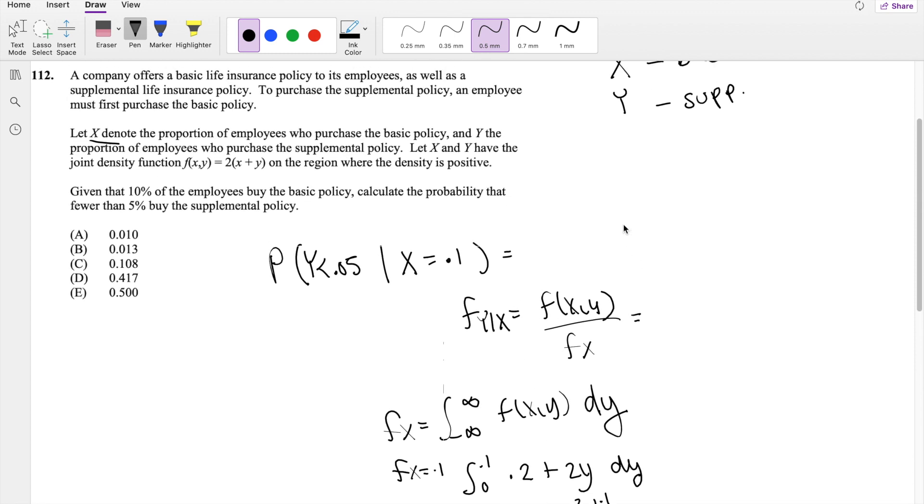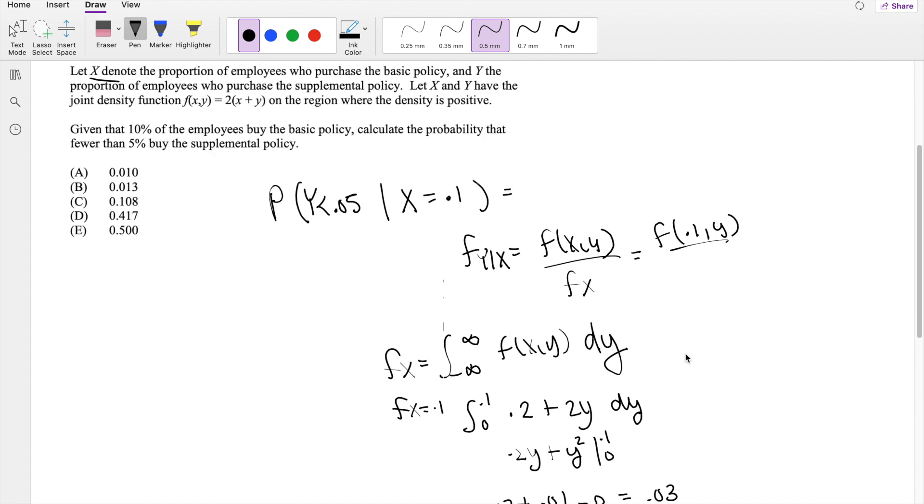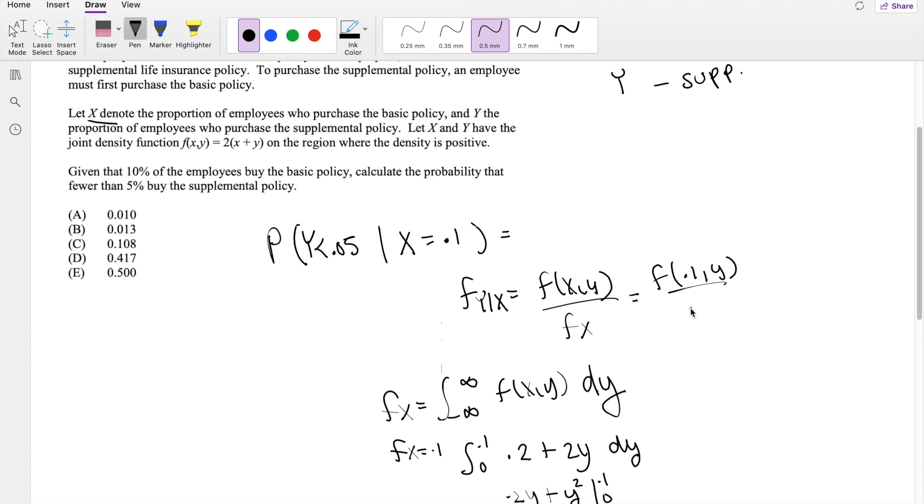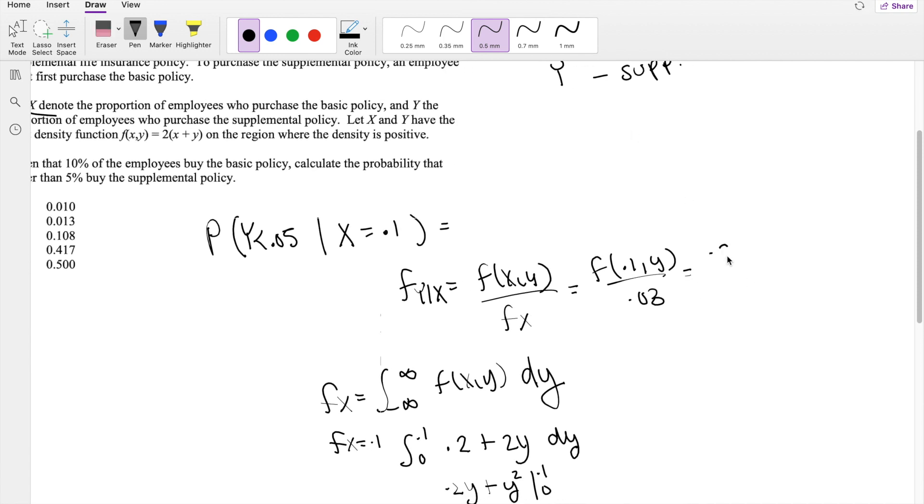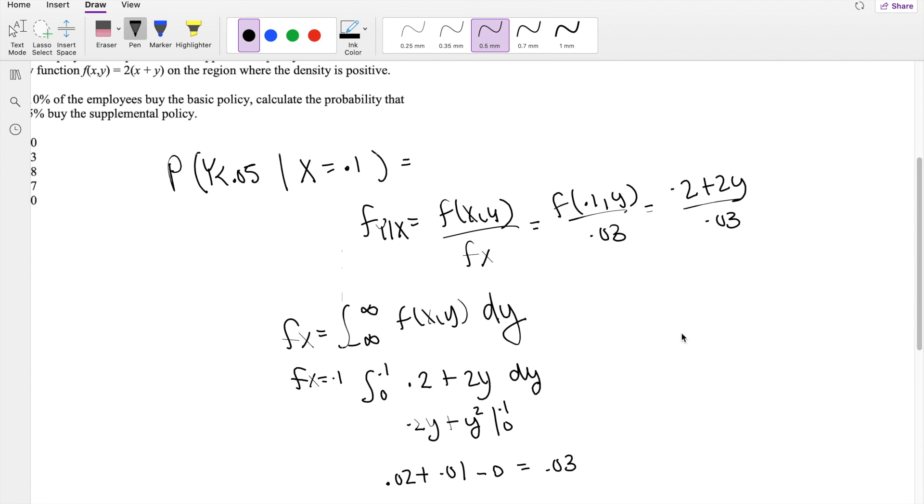Okay, and then F(X,Y), we can actually, we actually know this is equal to, X is equal to 0.1, so we can plug that in, divided by F(X), which is 0.03. So then this is equal to 0.2 plus 2Y, divided by 0.03. And we're looking for where Y is less than 0.05. So this is our final thing that we're looking for, 0.2 plus 2Y, divided by 0.03, dY.